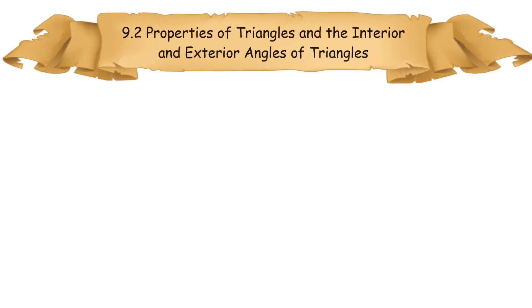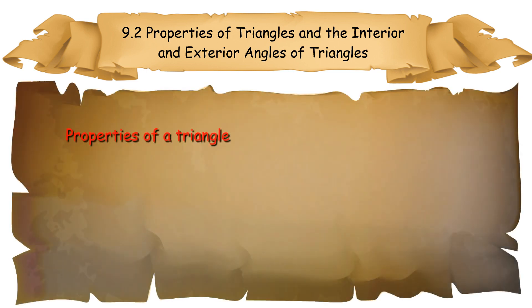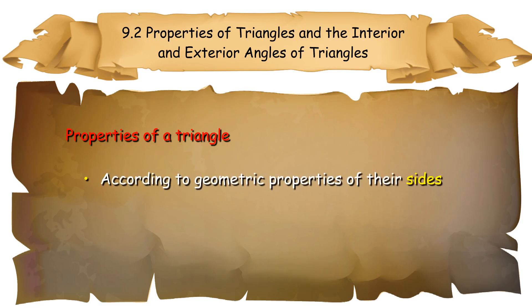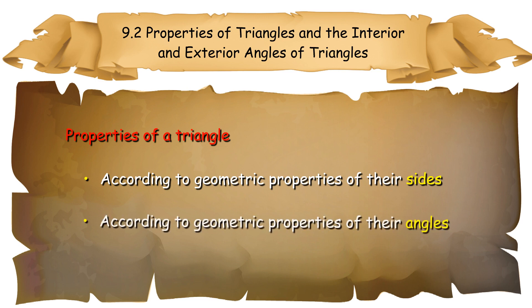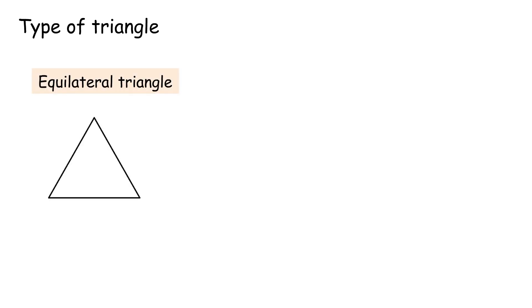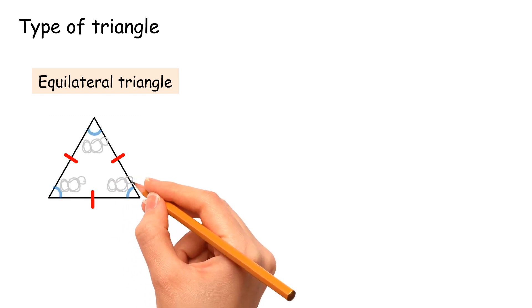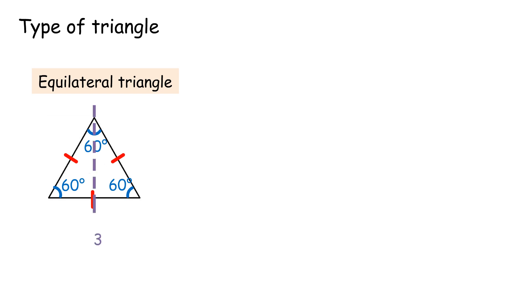9.2 Properties of Triangles and the interior and exterior angles of triangles. Triangles can be classified based on the geometric properties of the length of their sides or their interior angles. Equilateral triangle: all sides are of the same length, every interior angle is 60 degrees, and it has 3 axes of symmetry.